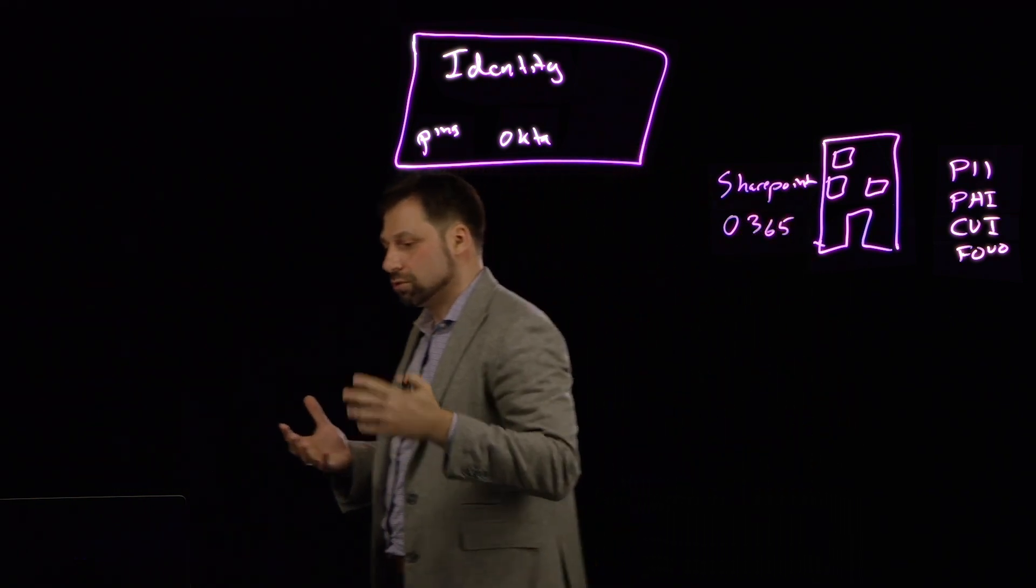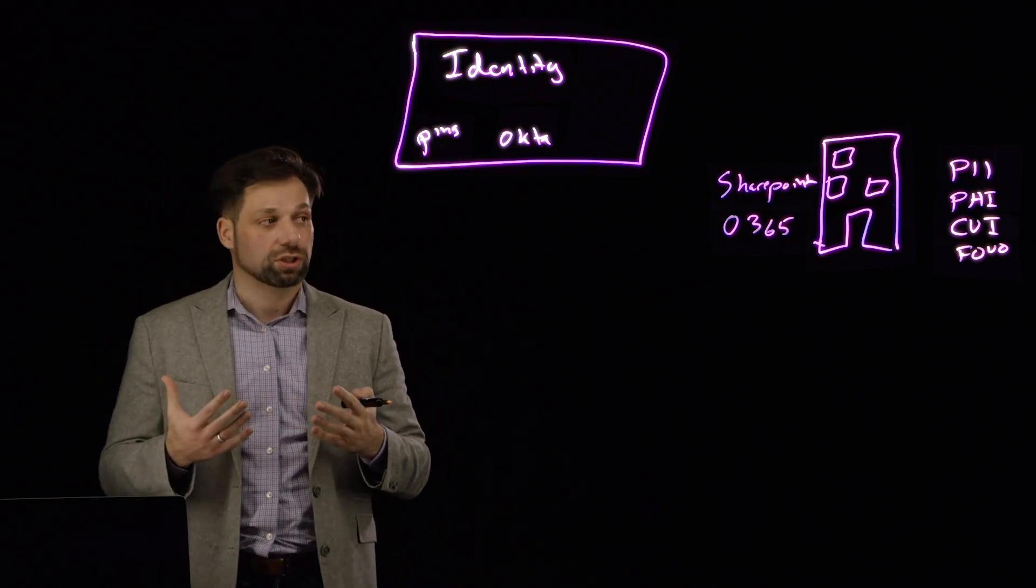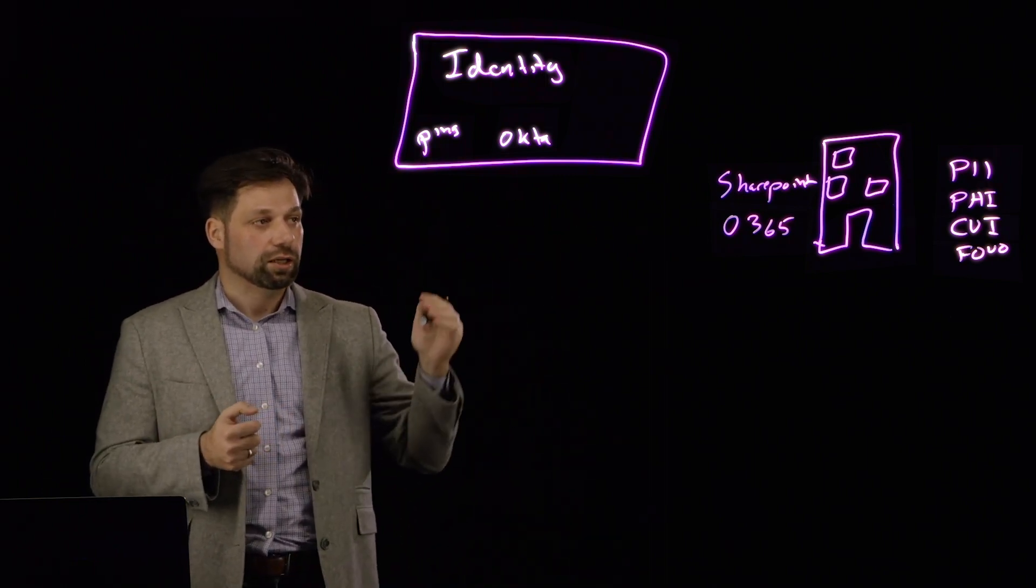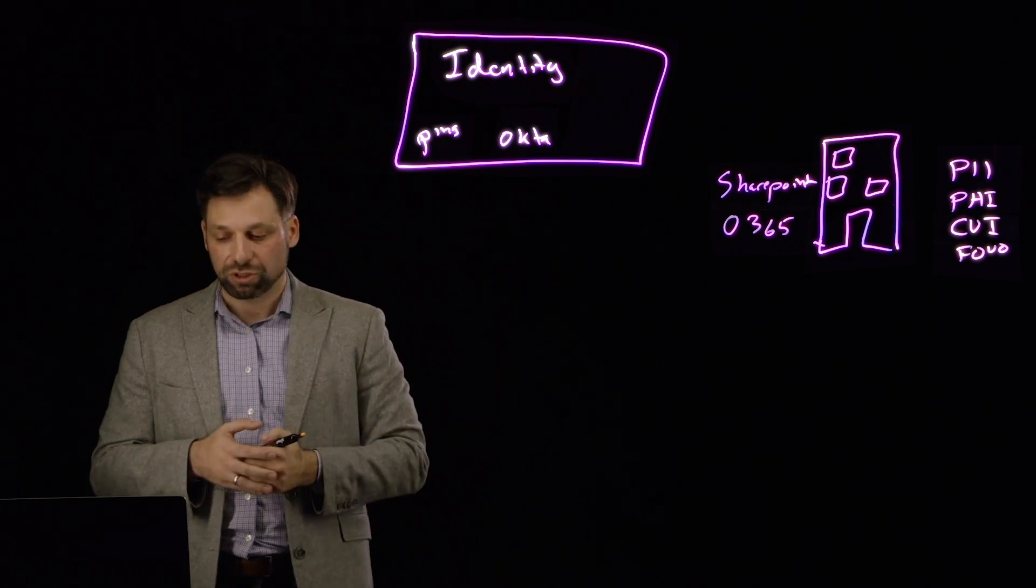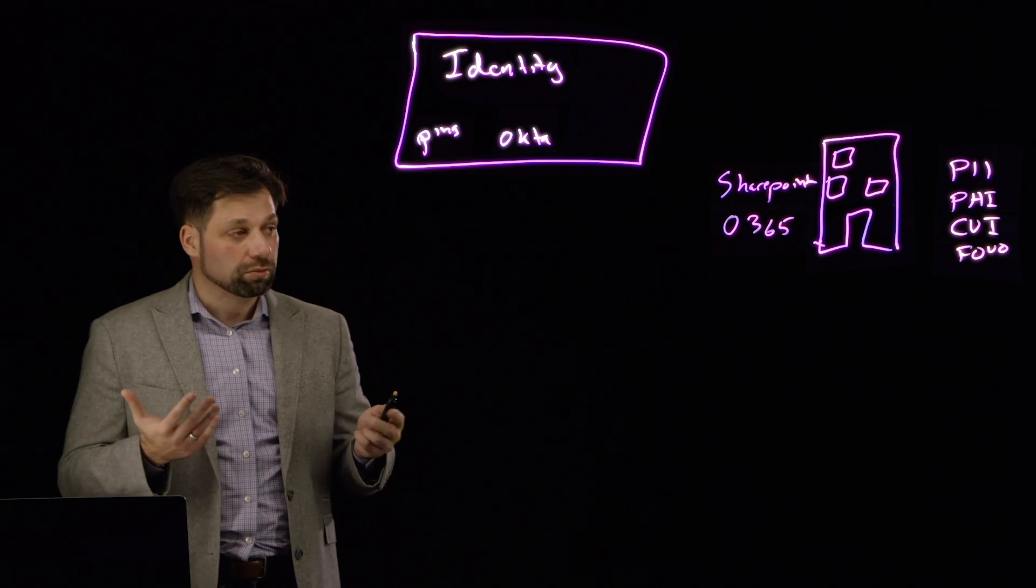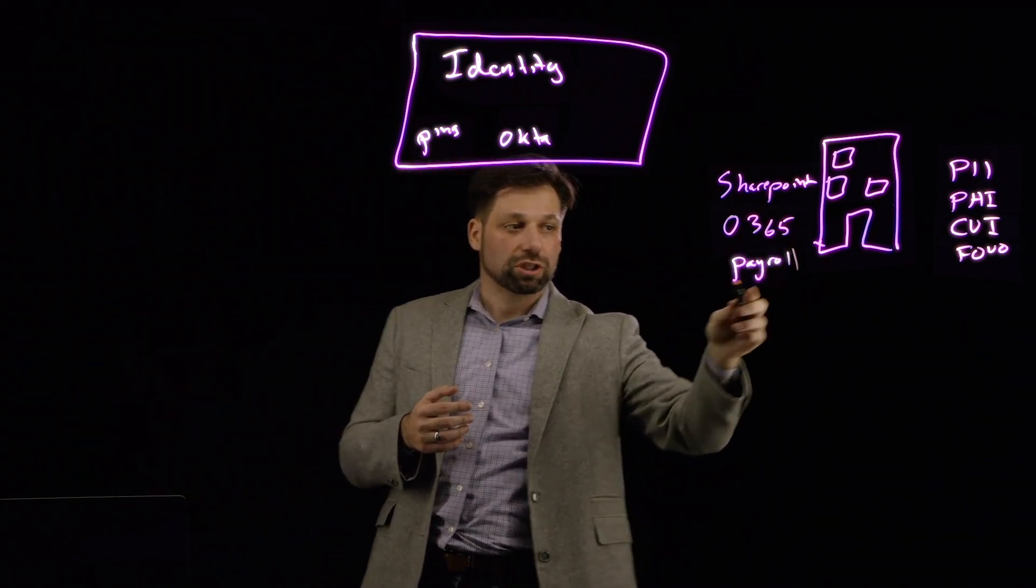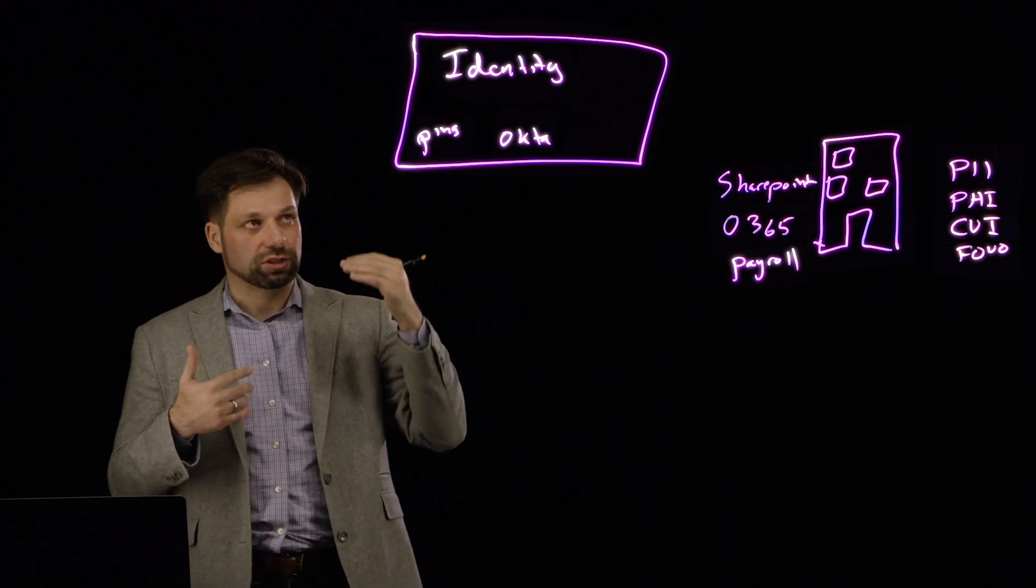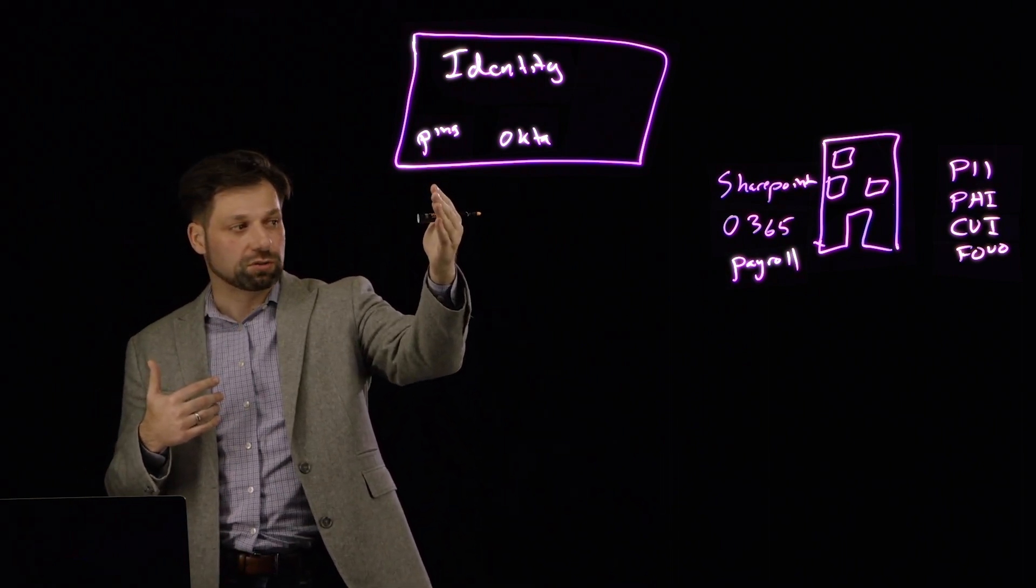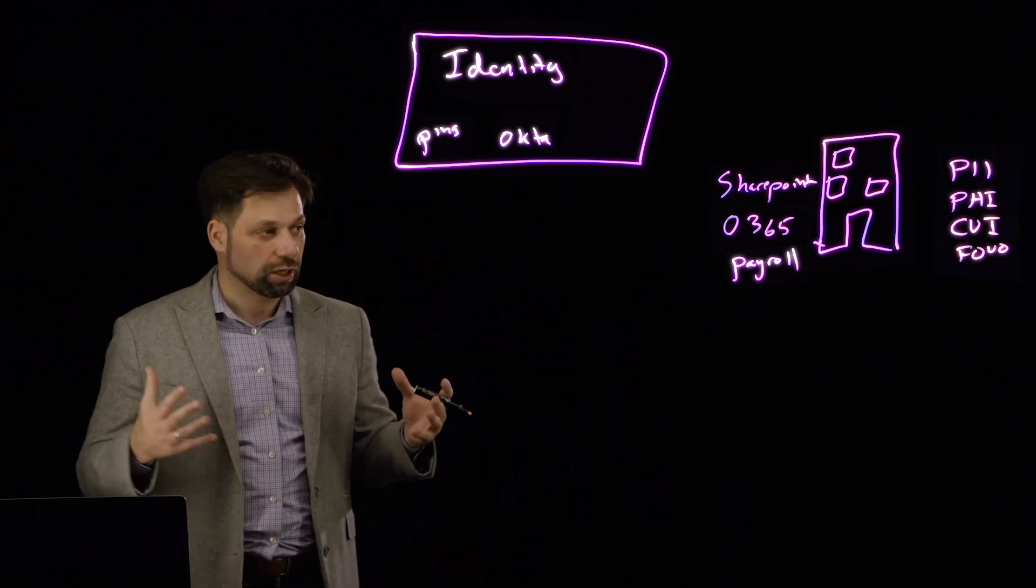We can use identity providers like Okta, Ping, SailPoint, and many others to control access to that on-prem network, to control access to the authentication of 365, SharePoint on-prem, and other solutions. Or maybe a very custom application like Payroll. We have to verify their employee first before we give them access to their payroll information. What's interesting is, over time, we've gone from on-prem.